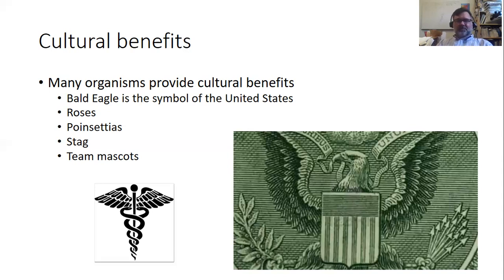The symbol for medicine features bird wings and two snakes. So that's ecosystem services — I've only highlighted what I consider to be the key ones. There are many more functions that animals have out there; you can pick any animal and it's serving some function. It may not be directly important to humans, but it's playing a role in the ecosystem. Thank you.